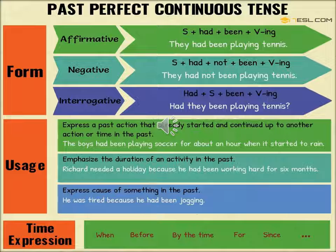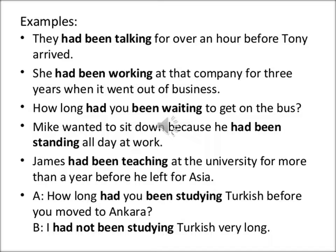A few examples are given — kindly go through these. Please note that whenever we use perfect continuous tense, there is a reference to a time expression with words like when, before, by the time, for, or since. This is a very important hint to identify perfect continuous tense — whether it is present perfect continuous, past perfect, or future perfect. In all these types of sentences, you will find a time reference with words like when, before, by the time, for, or since.